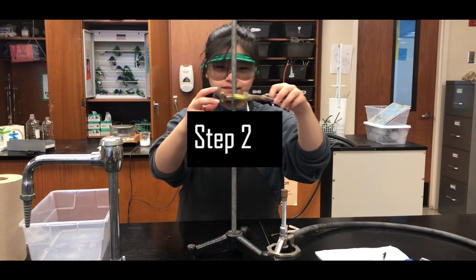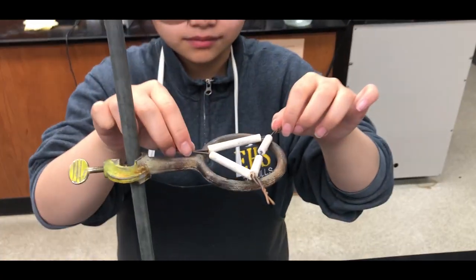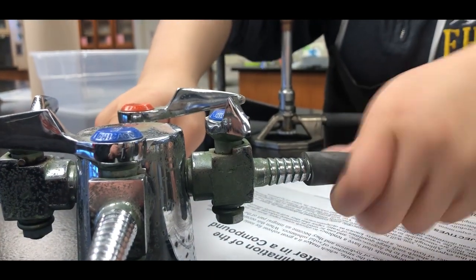Step 2 is to set up the lab as depicted. Place the clay triangle on top of the ring, then place the burner under and connect the burner to the gas source.